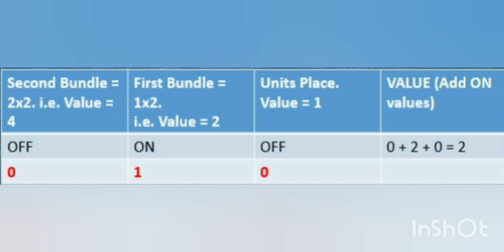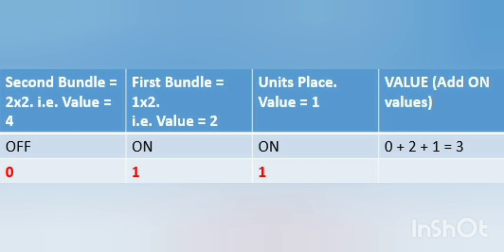if we wanted to write the number 2 in binary, we will write it as 0, 1, 0. And number 3 is written as 0, 1, 1.